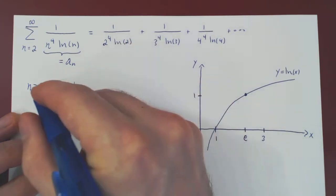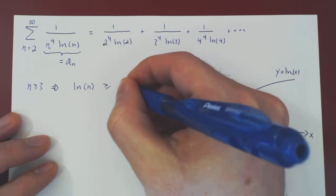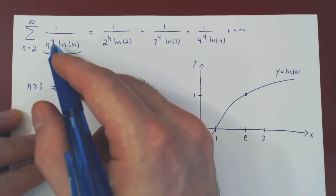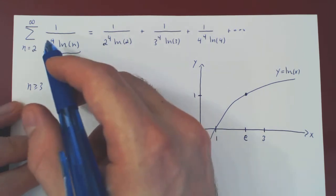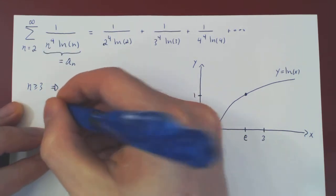And so if n is above 3 or equal to 3, ln of n is at least 1. Well, we can now multiply across by n to the 4, as n to the 4 is clearly positive. This will preserve the direction of our inequality.